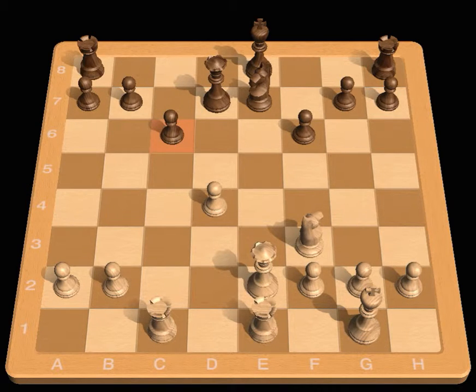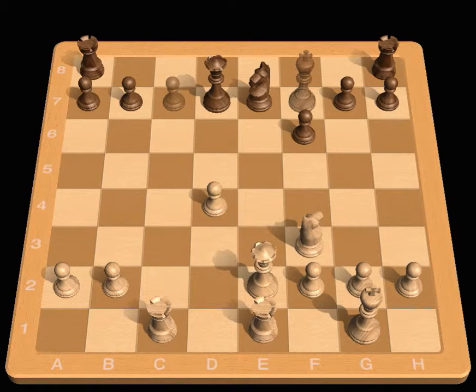c6, the losing move. Black could have come away unscathed with King f7 when White has no apparent way to get at the temporarily exposed Black King.